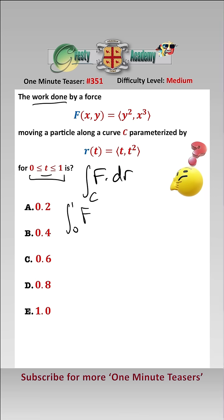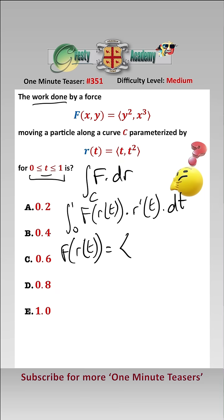The integral is F(r(t)) · r'(t) dt, so we need to work these out. Now F(r(t)) is equal to—well, F of x is y² and y is t², so that will be equal to t⁴. And for the second component, x³ is t cubed, so we have t³.